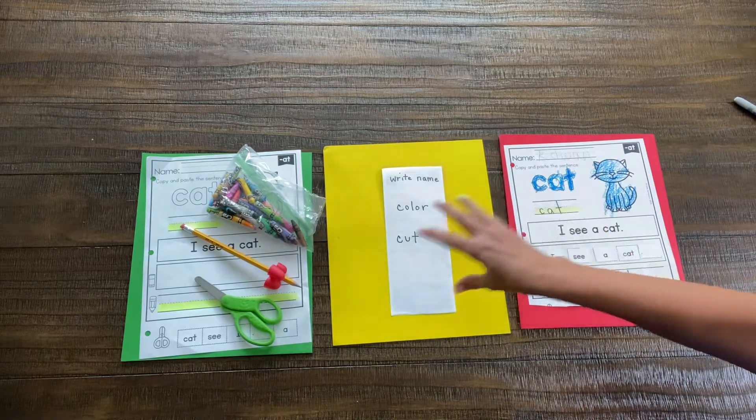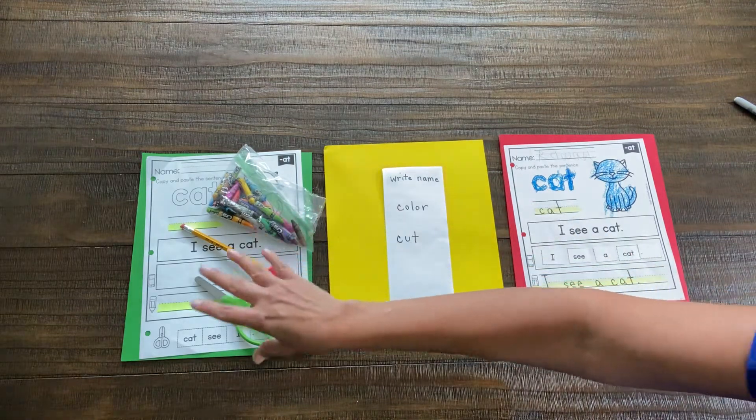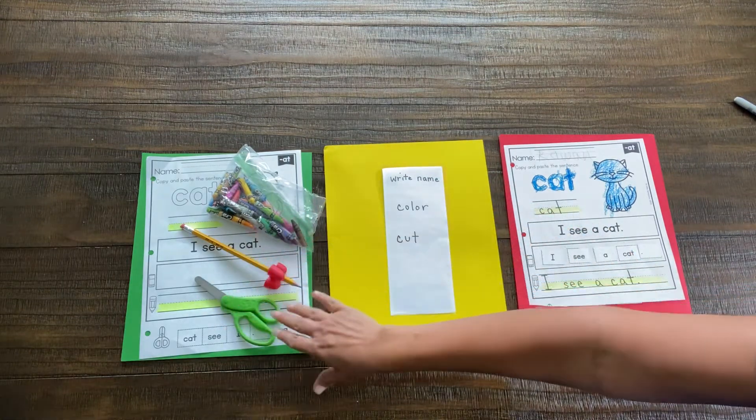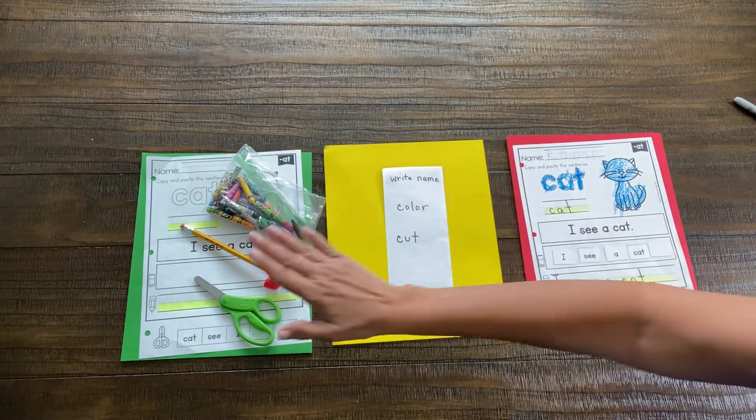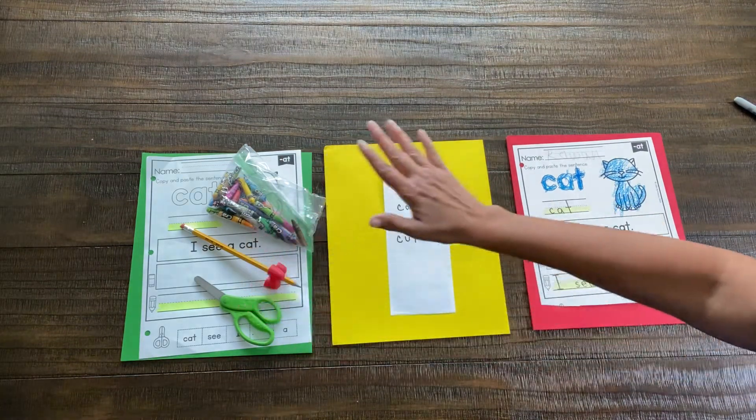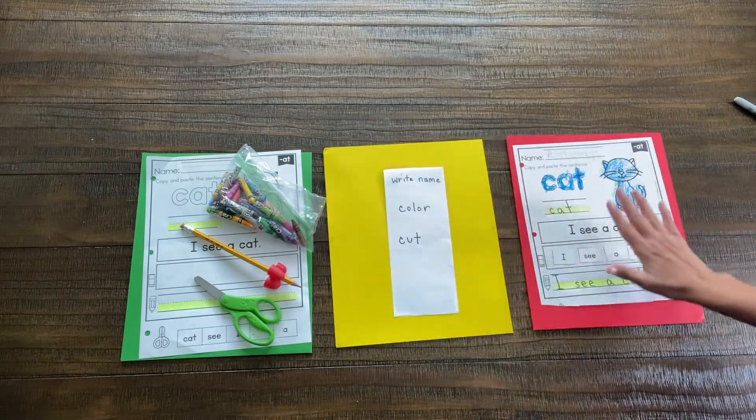So now you've worked backwards to plan, and now we're going to work forwards to actually complete it. It's important for them to have this model to see. But now they're going to start. Now that they've got their materials ready, they're going to actually follow the steps to complete it.